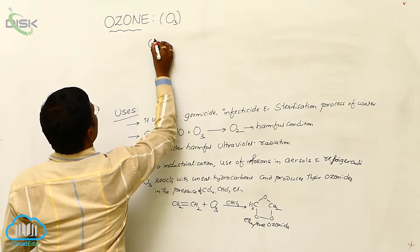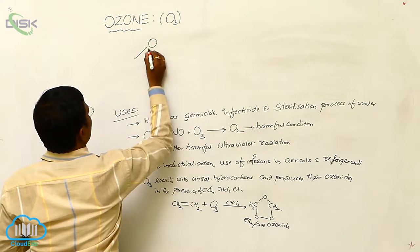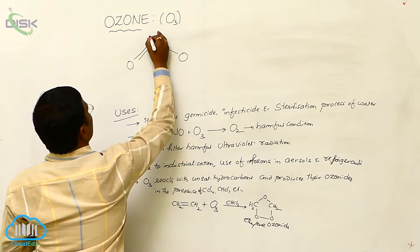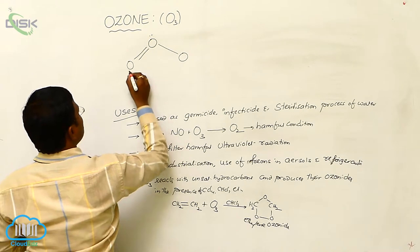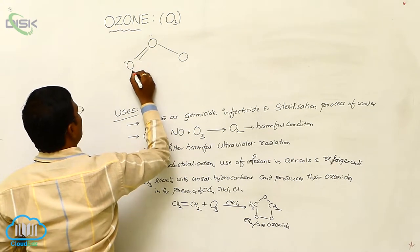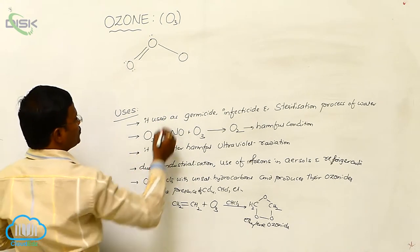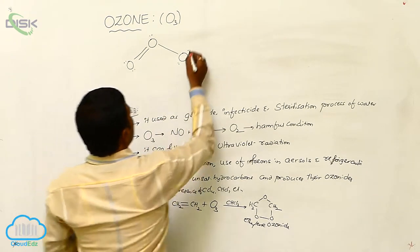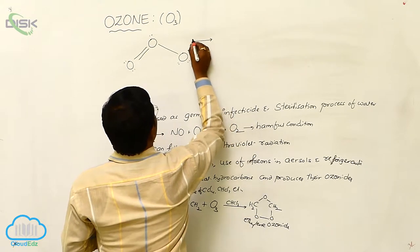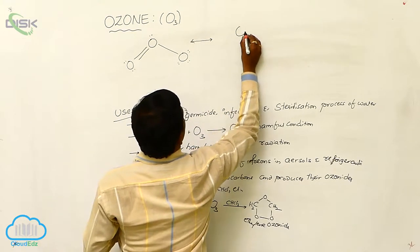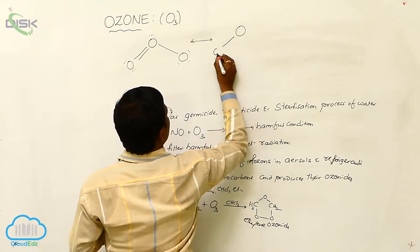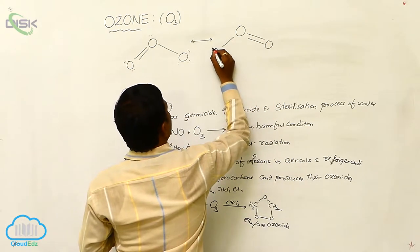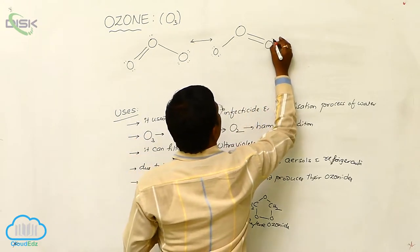The structure of ozone shows this type of geometry: O double bond O single bond O. The middle oxygen has three bonds. One terminal oxygen has two bonds, and the other terminal oxygen has a single bond. This structure shows resonance with another structure.